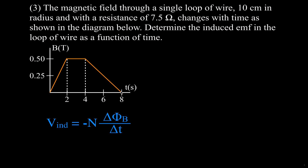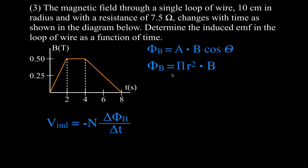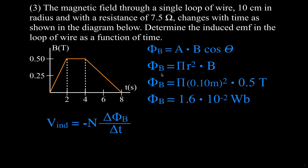For the first section, we calculate the change in magnetic flux. The area is pi r squared with a radius of 0.10 meters, and the magnetic field at the end of 2 seconds is 0.5 Teslas. The final flux is therefore 1.6×10⁻² Webers. At the start, the magnetic field is zero, so the initial flux is zero.